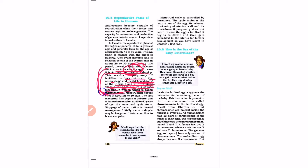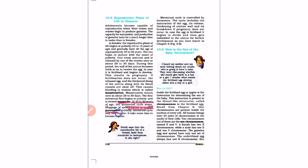Menstruation occurs once in about 28 to 30 days. The first menstrual flow begins at puberty and is termed Menarche. At 45 to 50 years of age, the menstrual cycle stops, and the stoppage of the menstrual cycle is termed Menopause.